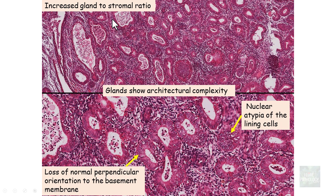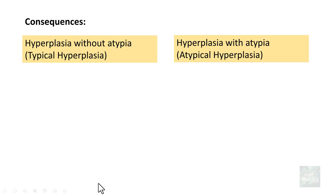In endometrial hyperplasia without atypia, increased gland-to-stromal ratio is present and glands may show architectural complexity, but there will be no nuclear atypical features. The defining feature of atypical hyperplasia is nuclear atypia of the lining cells, characterized by loss of normal perpendicular orientation to the basement membrane.